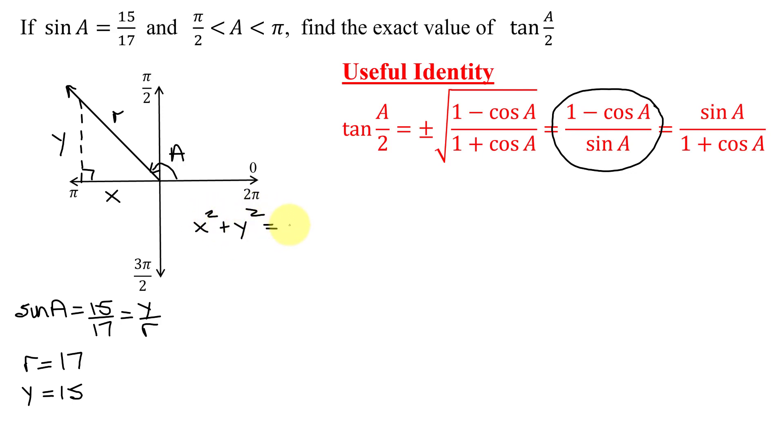x squared plus y squared equals r squared. We're looking for x, so x squared plus 15 squared equals 17 squared. x squared plus 225 equals 289. Subtracting 225 from both sides, I get x squared equals 289 minus 225, which is 64.